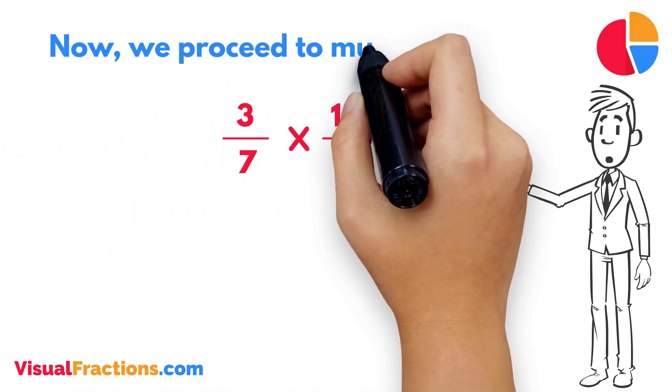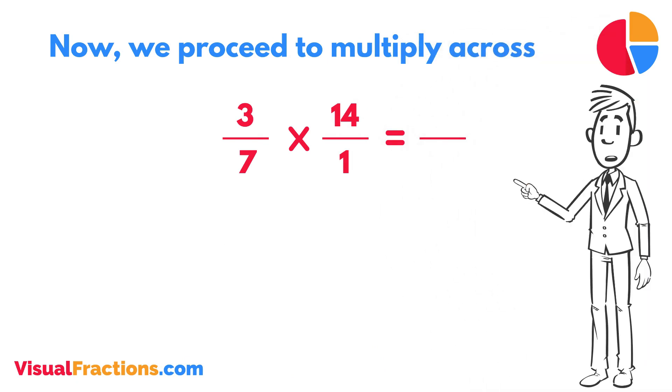Now, we proceed to multiply across. First, multiply the numerators, 3 times 14 equals 42.